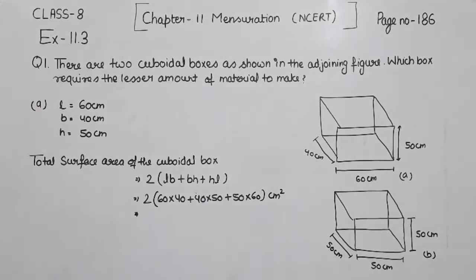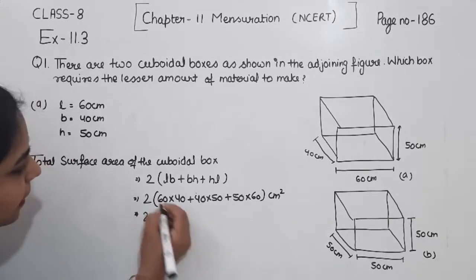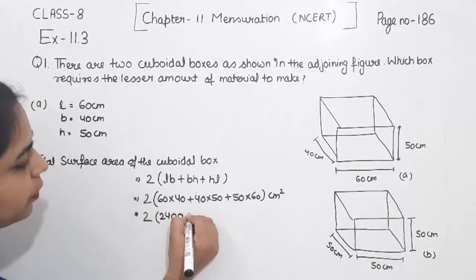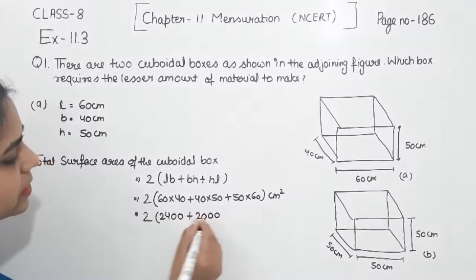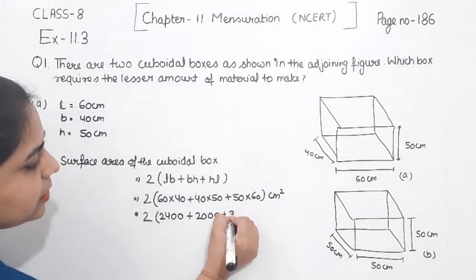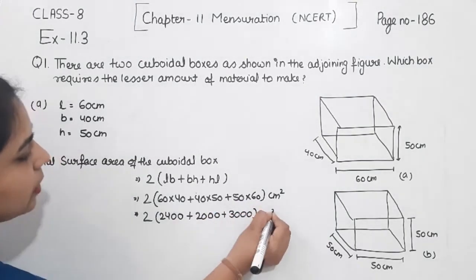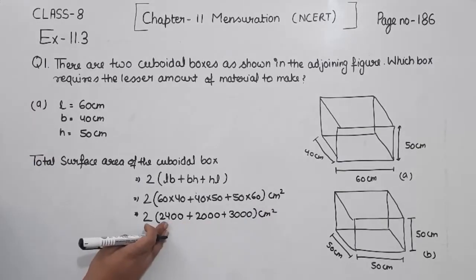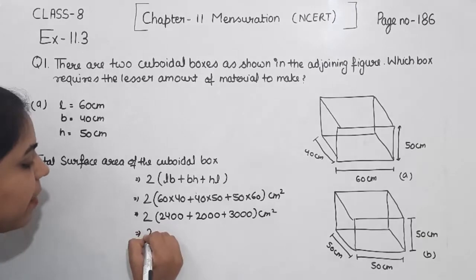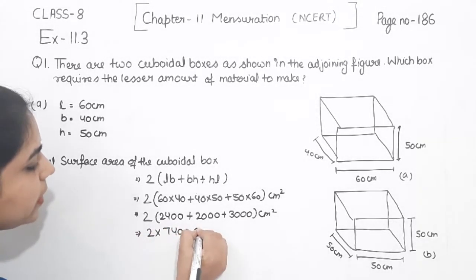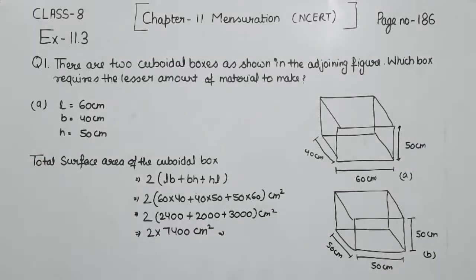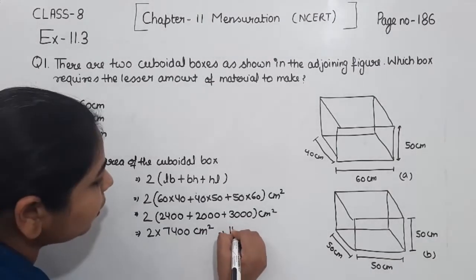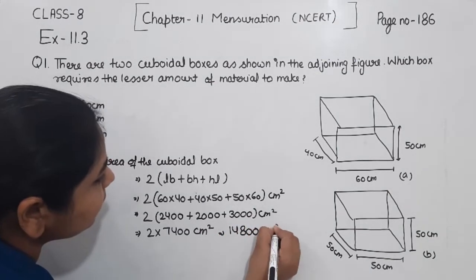Now solving: 2 × (2400 + 2000 + 3000). Adding these values: 2400 + 2000 gives 4400, plus 3000 gives 7400. So this is 2 × 7400 centimetres squared. Multiplying, we get 14,800 centimetres squared.